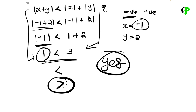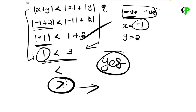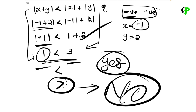When both numbers are positive, we get equality. When both are negative, we also get equality. When one is positive and one is negative, we get strict inequality, less than. So we have shown all three cases. This is question 7. Thank you.